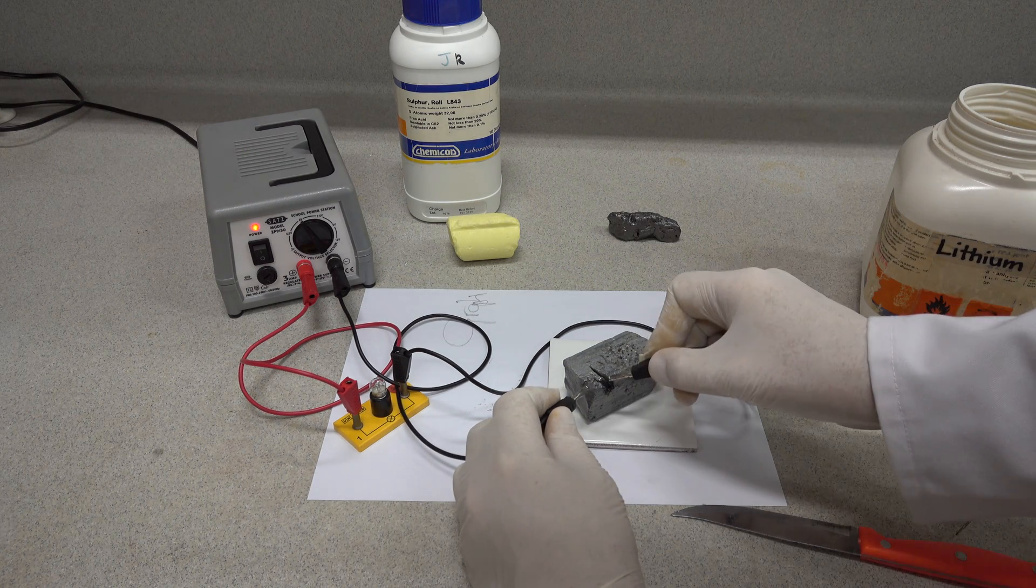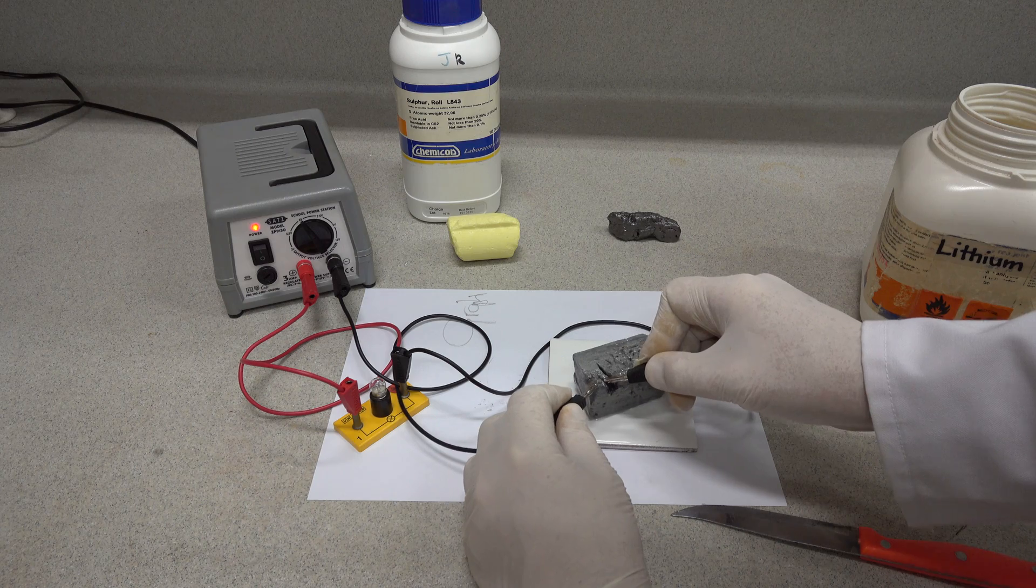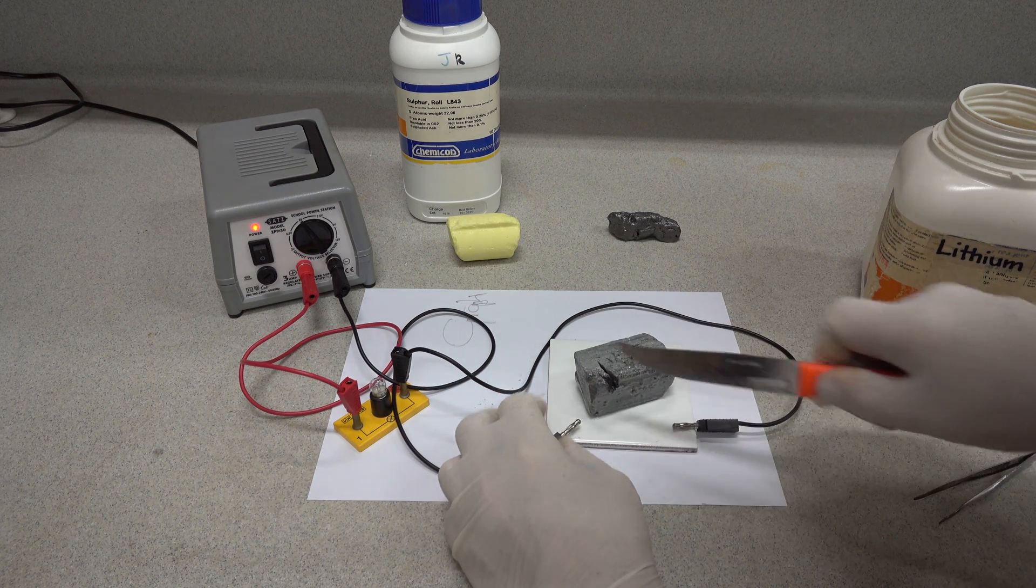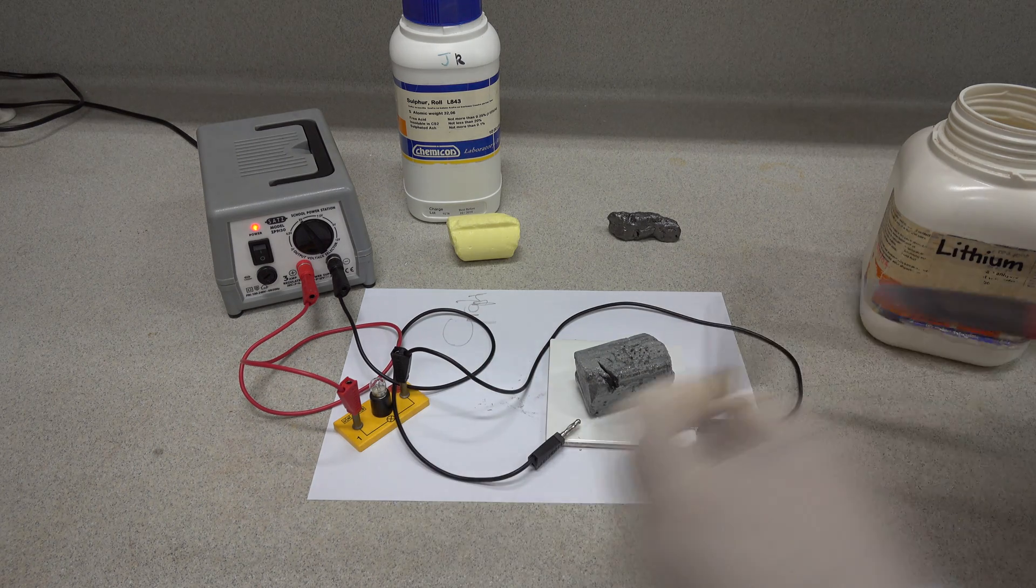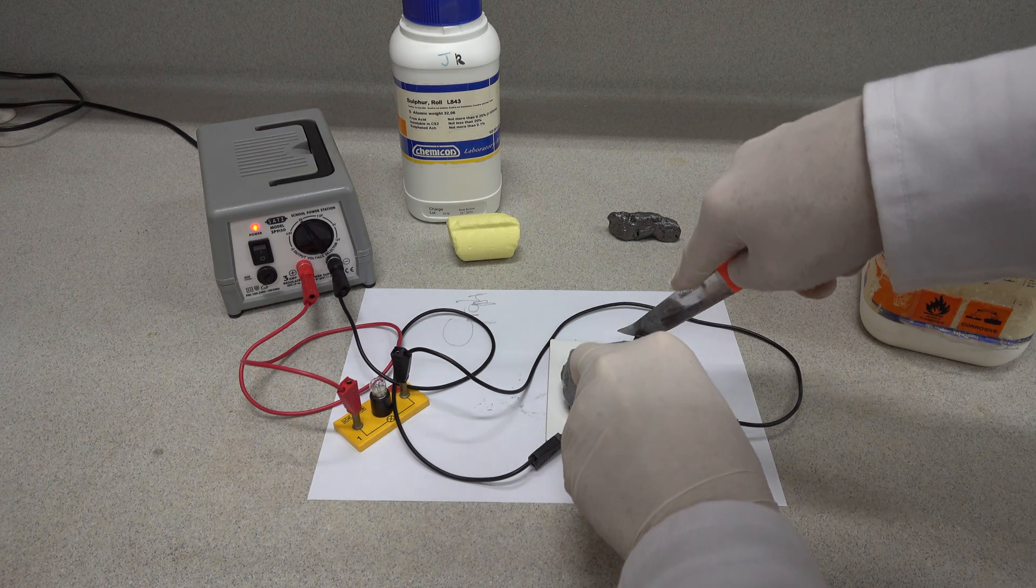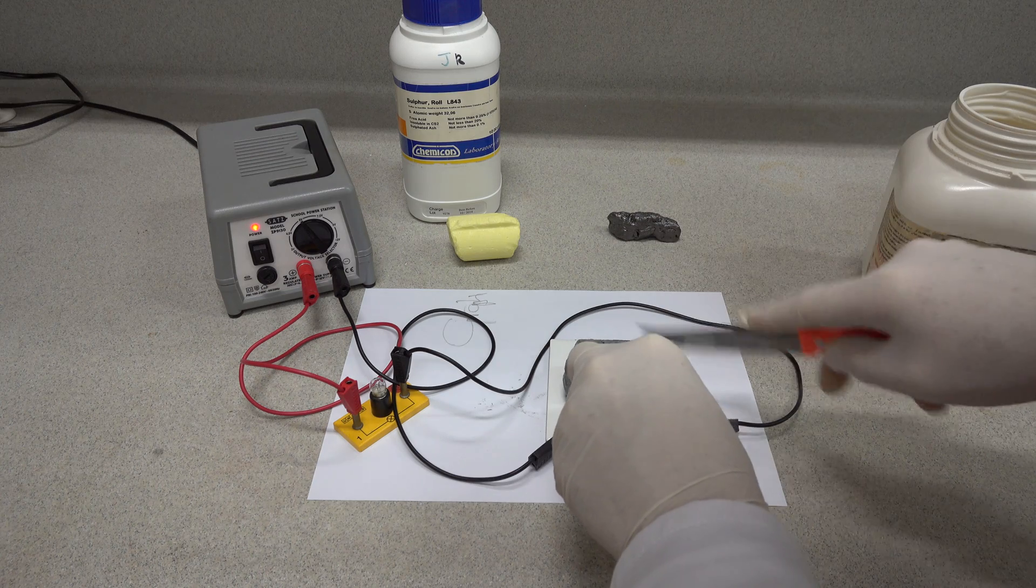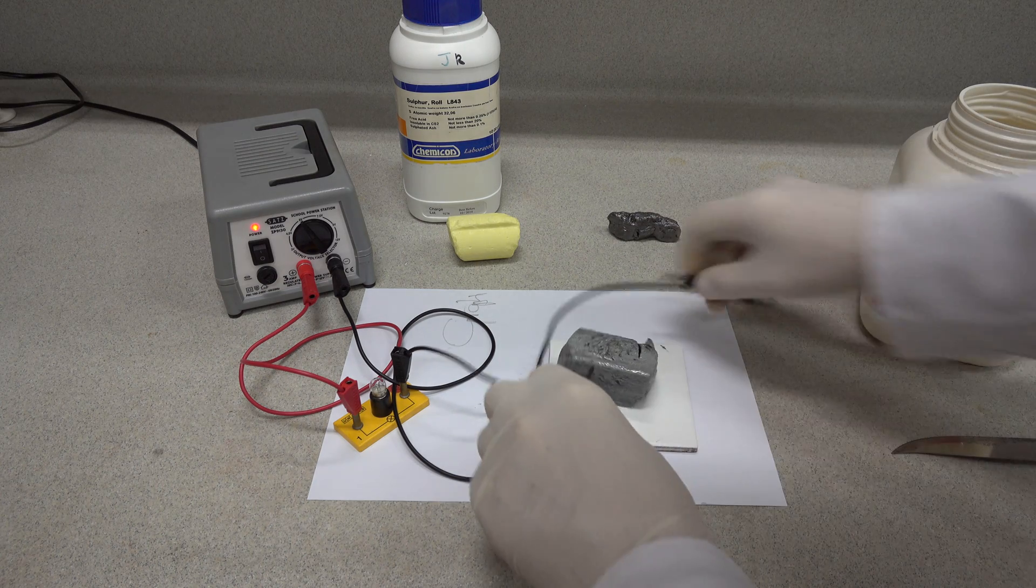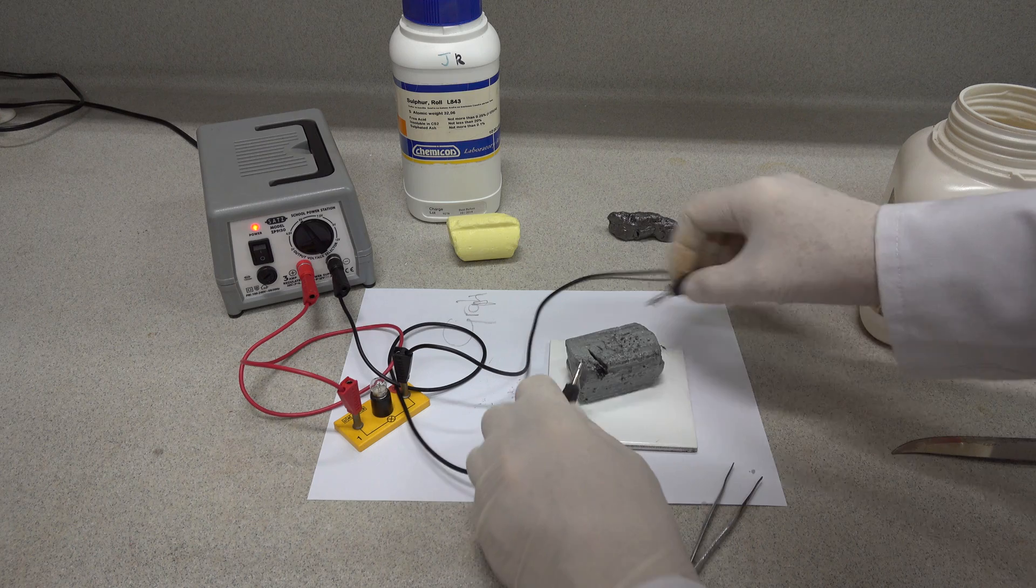So again, if we test our lithium with the electrical contacts... probably got some oil in the way there. Let's just manipulate that a little bit more. Fresh cut. Fresh surface of the lithium on either side. Have to be careful, it's a very reactive metal. Let's try again.